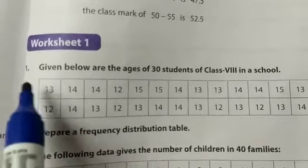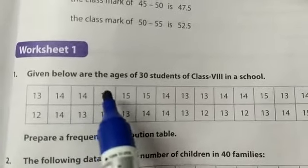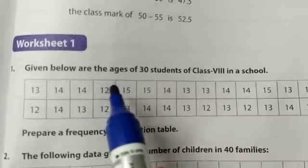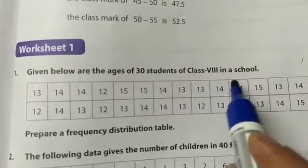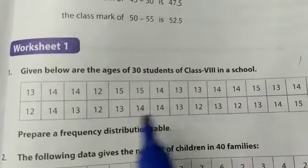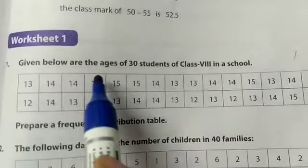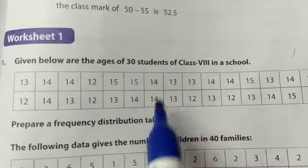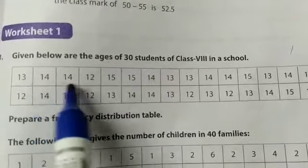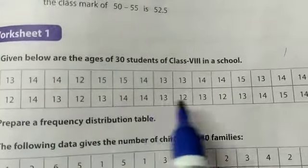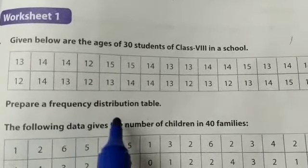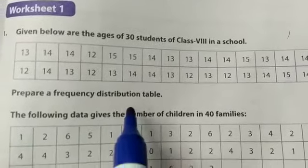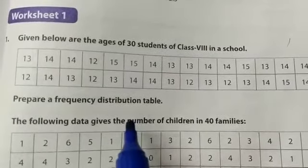Worksheet one, question first. Given below are the ages of 30 students of class 8th in a school. This is a table with 13, 14, likewise. You have to prepare a frequency distribution table.